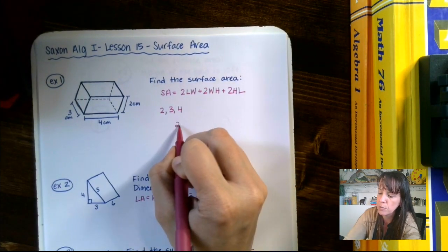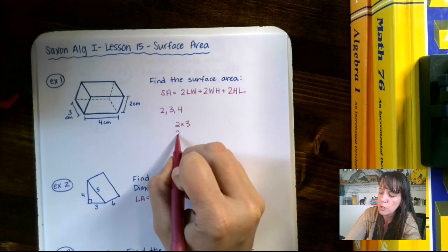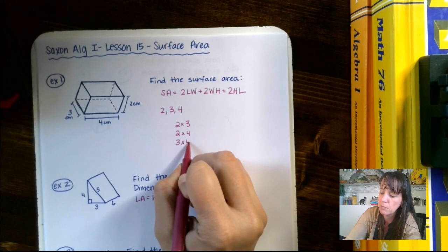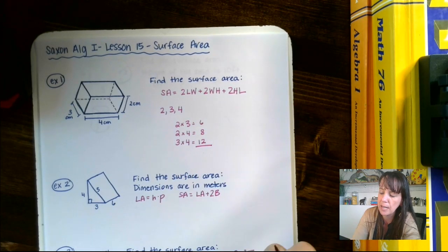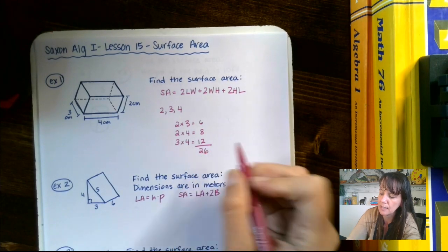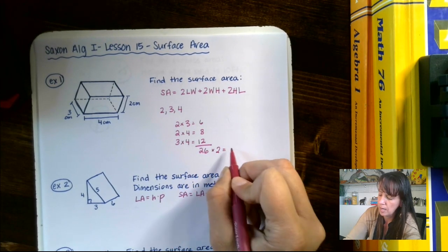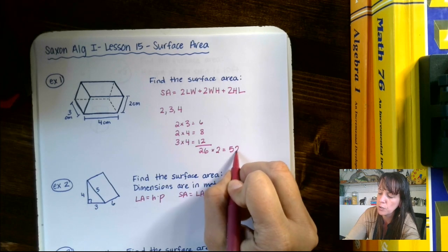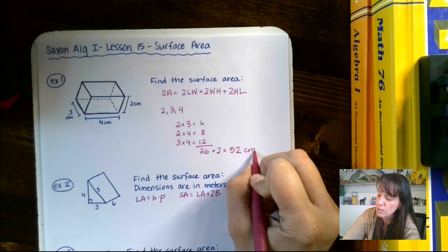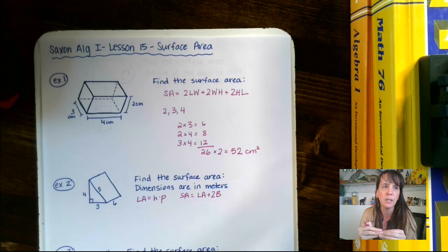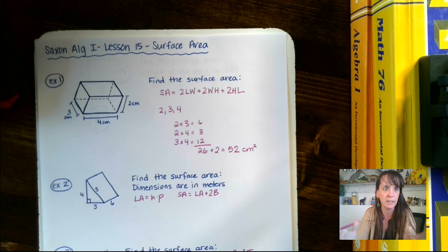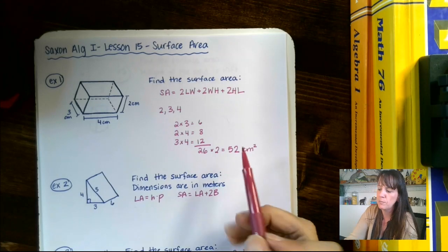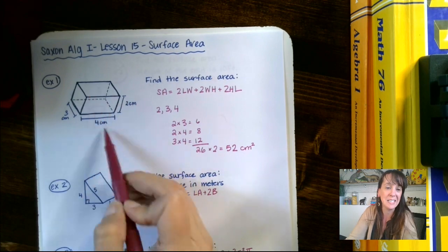I think that formula is a little more complicated than it needs to be. What we're going to do is multiply 2 times 3, 2 times 4, and 3 times 4. We get 6, 8, and 12. Now we add those up — that gives us 26. We multiply that by 2 and we end up with 52. Units are in centimeters, so it's 52 centimeters squared. Remember, surface area is like the outside of the package — like wrapping paper that covers all six sides.